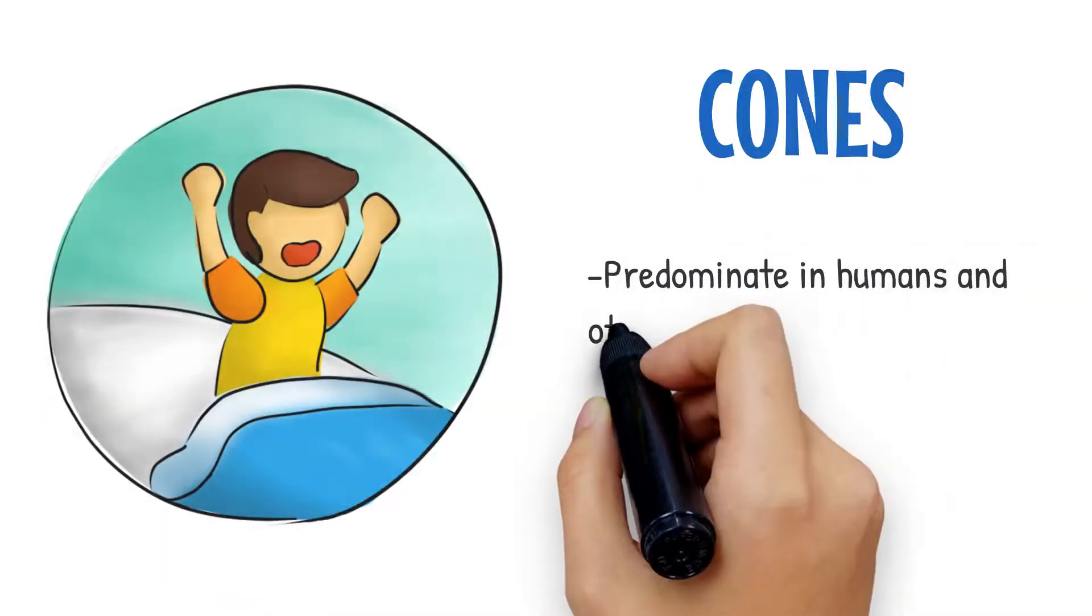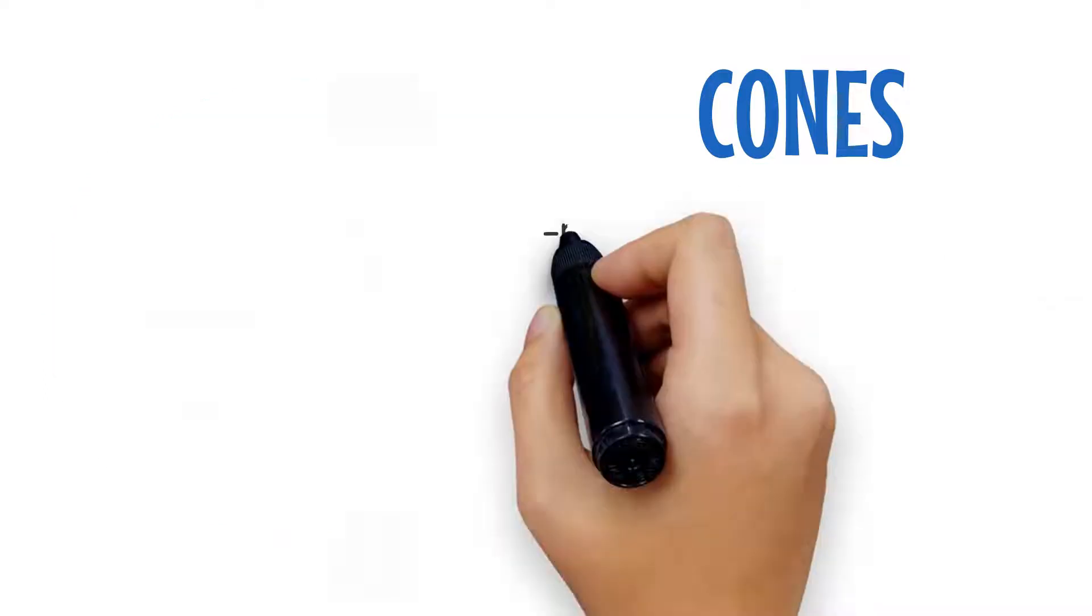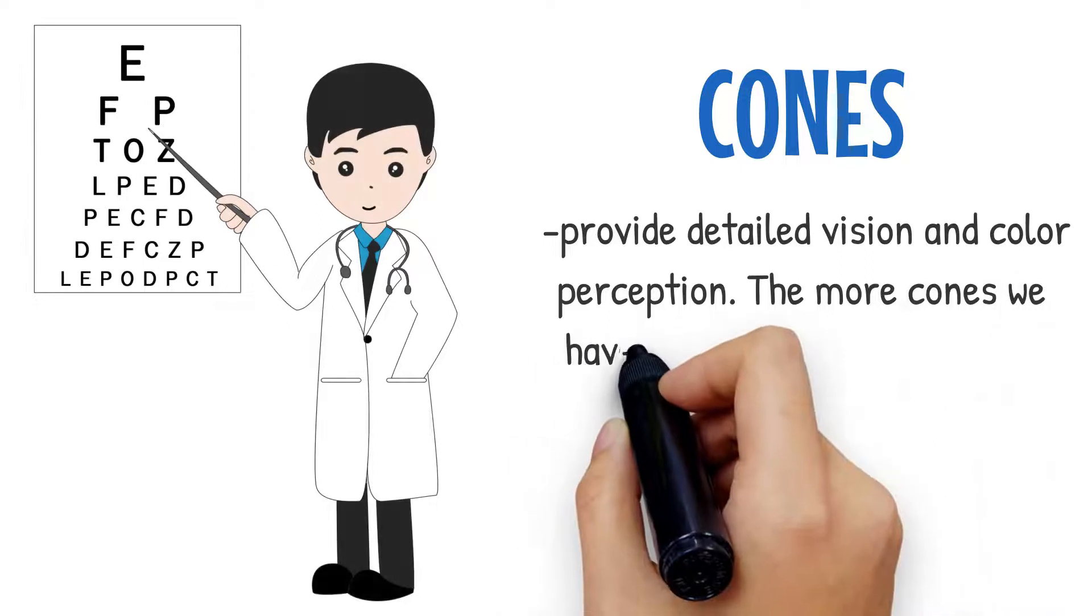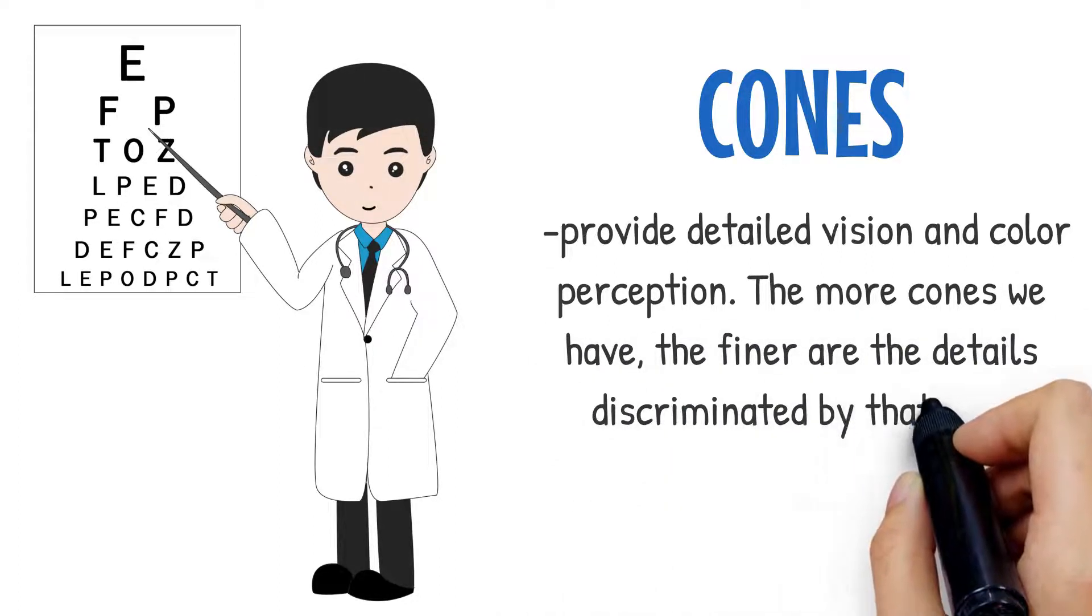Cones predominate in humans and other beings that are active during the day. They provide detailed vision and color perception. The more cones we have, the finer the details that can be discriminated by that area.